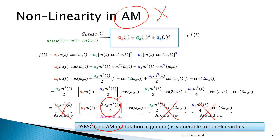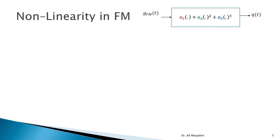We conclude that double sideband and AM modulated signals in general are vulnerable to nonlinearities. Now let's try this for the case of FM.